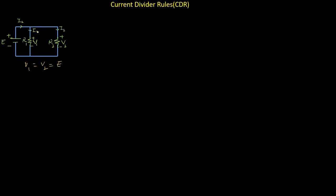There are two ways to find out the current through each path in a parallel circuit. The first way is by using Ohm's Law, which states that I1 equals V1 divided by R1. Since in a parallel circuit the voltage across each component equals the DC voltage source, V1 equals E, so I1 equals E divided by R1. Similarly, I2 equals V2 divided by R2, and since V2 equals the input voltage E, I2 equals E divided by R2.